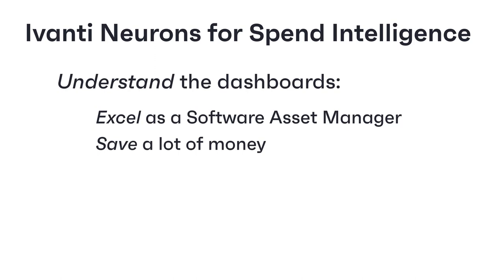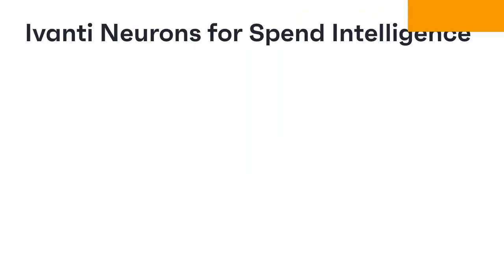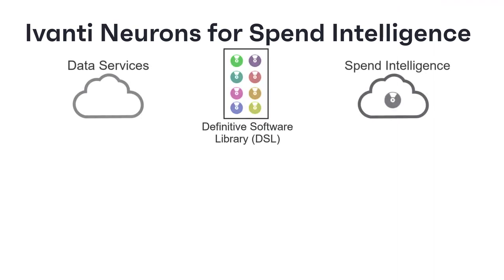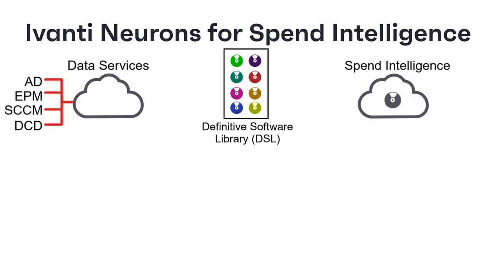Before we take a look at the individual components of Ivanti Neurons for Spend Intelligence, let's take a very high level look at what's going on under the covers. First, Ivanti Neurons discovers all of the software installed on your estate. This generates a lot of data that can be quite messy.